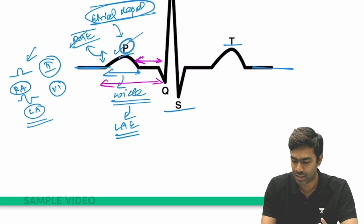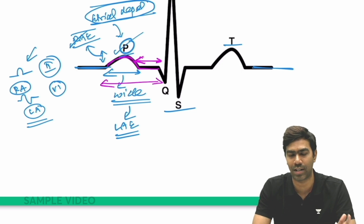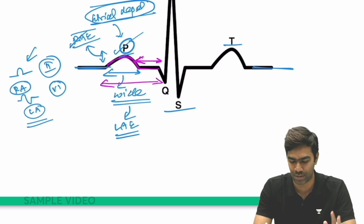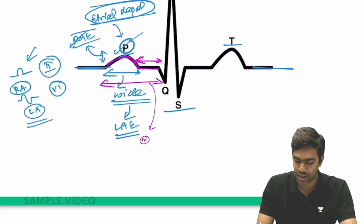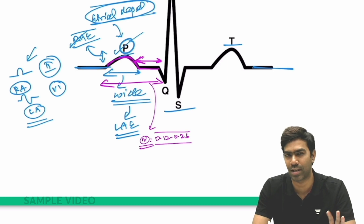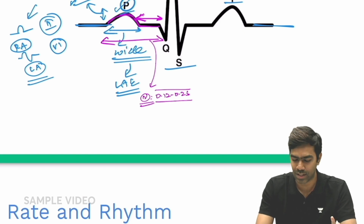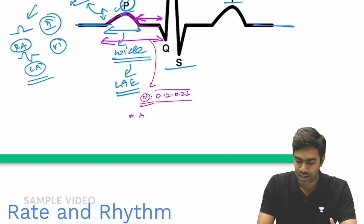The PR segment is the flat isoelectric portion, whereas the PR interval includes the P wave within it. A common exam mistake is calculating the PR interval without including the P wave — the PR interval must include the P wave. The normal PR interval is 0.12 to 0.2 seconds, or 120 to 200 milliseconds. The reason the PR interval exists in the first place is because of the AV nodal delay.